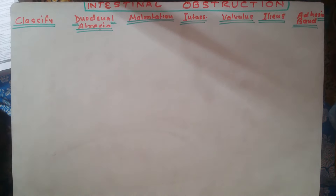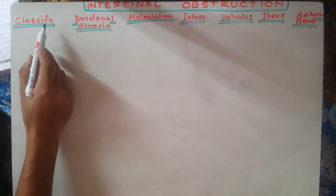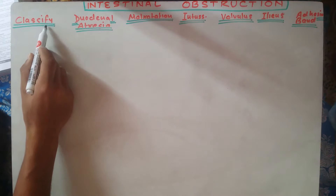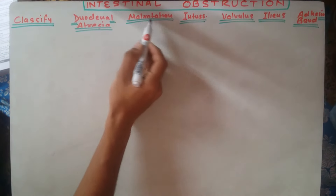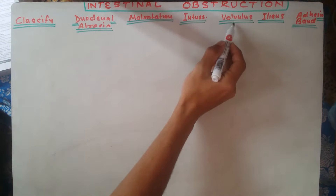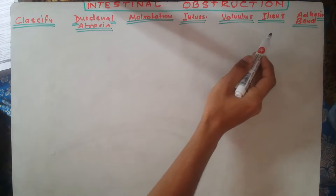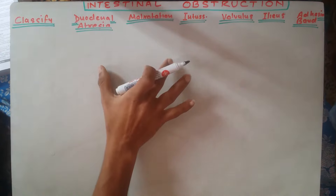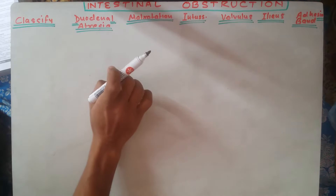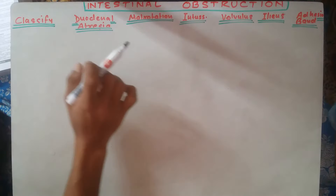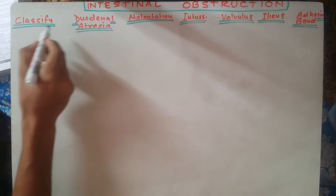In this session on intestinal obstruction, we will start by classifying different types of intestinal obstruction, then cover duodenal atresia, malrotation, intussusception, volvulus, ileus, adhesion and band formation, along with some important MCQ points regarding intestinal obstruction. We will start from a general introduction about all these diseases.